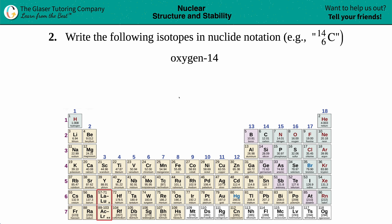Number two: write the following isotopes in nuclide notation. For example, they give us carbon-14 with a 14 on the top, a 6 on the bottom, and a C. In this case, we have to do the same type of notation with oxygen-14. Now, in this example, there are three components.